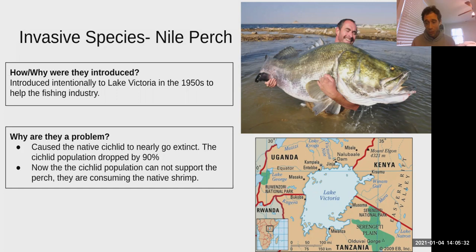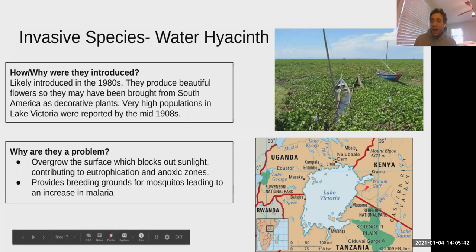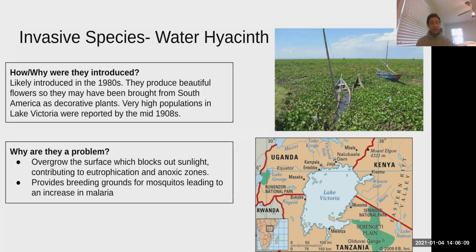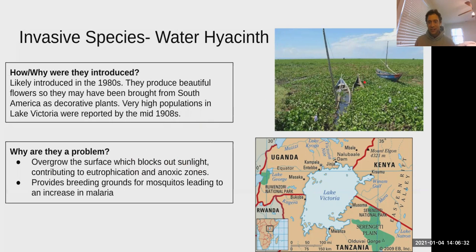The water hyacinth, also in Lake Victoria, is an invasive plant — not an animal. Photos show the lake's surface completely covered as if it were a field. First noticed in the 1980s, possibly introduced as decorative plants due to their pretty flowers, they spread quickly and create a carpet over the water's surface. This blocks sunlight contributing to eutrophication and anoxic zones, provides breeding grounds for mosquitoes increasing malaria, and blocks fishing ports making them difficult to function.